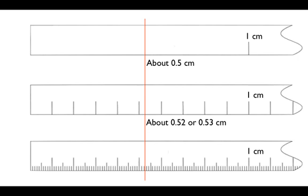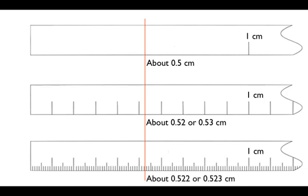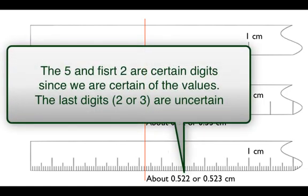And for that reason, we can make our estimate out to the thousandths place in this case. In this case, 0.522 or 0.523. That would be our estimated value for that reading.